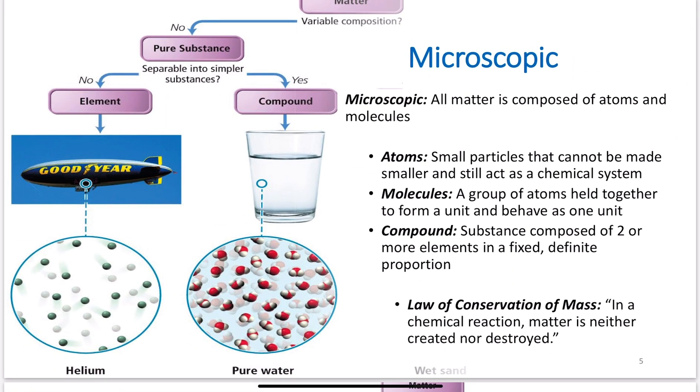The microscopic view is this idea that all matter is composed of atoms and molecules. We will spend some time this semester talking about what an atom is and what a molecule is. Just generally speaking, an atom is a small particle that cannot be made smaller and still act as a chemical system. We have a periodic table. We're going to talk about that in just a minute. The periodic table has 118 elements on it.